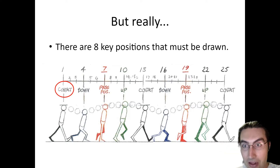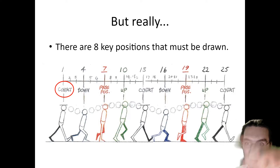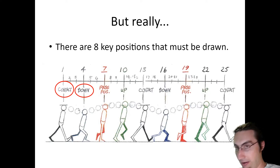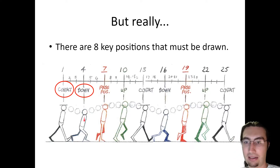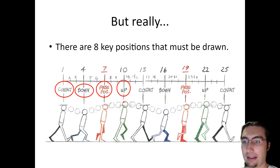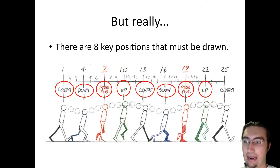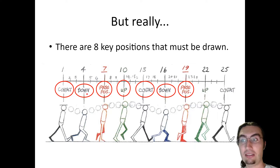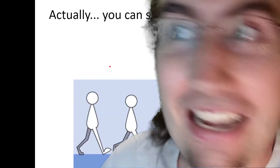There's the contact position, where the foot is initially stepping and touching the ground in front of the character. Then there's the down position, where the character's head basically bobs down as they step. Then the pass position, where the character's other leg is passing behind or in front of the leg currently walking. Finally, the up position, where the head is at the highest point and the back leg is lifting up as it steps forward. Then the next four positions repeat for the leg on the other side.